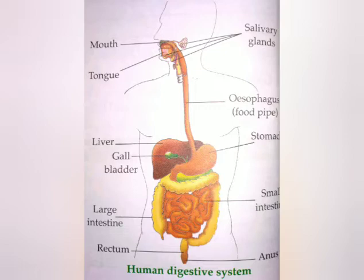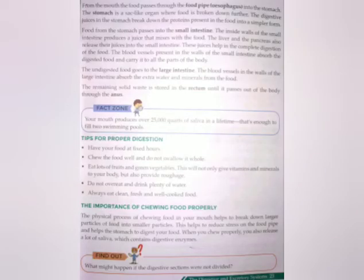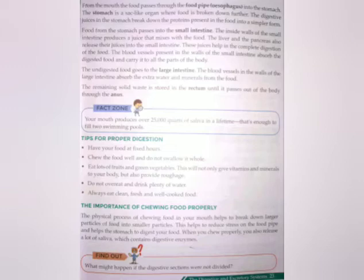For proper digestion, you should have your food at fixed hours. You should chew the food well and not swallow it whole. Eat lots of fruits and green vegetables as they are rich in vitamins and minerals and also provide roughage. Always eat clean, fresh, and well-cooked food and drink plenty of water. Proper chewing helps the stomach digest food properly because it releases a lot of saliva which contains digestive enzymes, and those enzymes help break down large food particles into smaller particles.